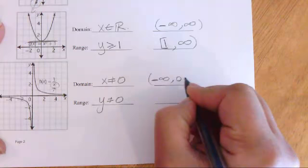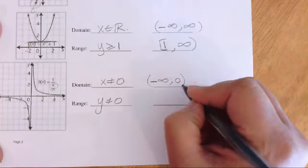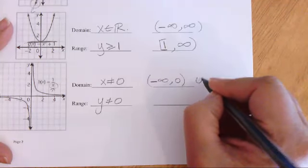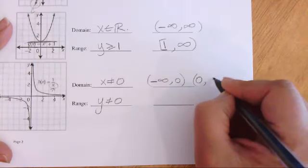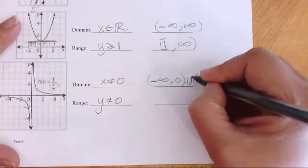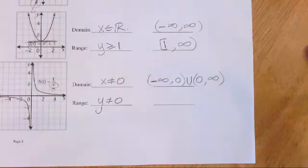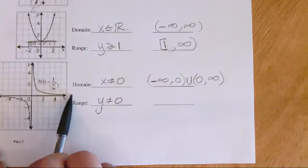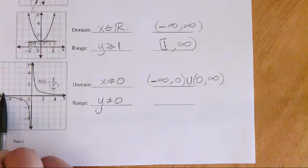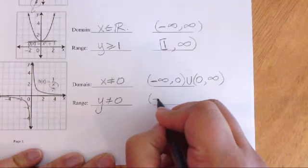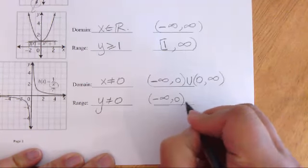In interval notation, we go from negative infinity all the way up to zero, but can't include zero, then from zero to positive infinity. Since we have these two separate pieces, we need a union symbol between them. This accounts for the negative x-values less than zero and the positive x-values greater than zero. The range ends up looking exactly the same: (-∞, 0) ∪ (0, +∞).